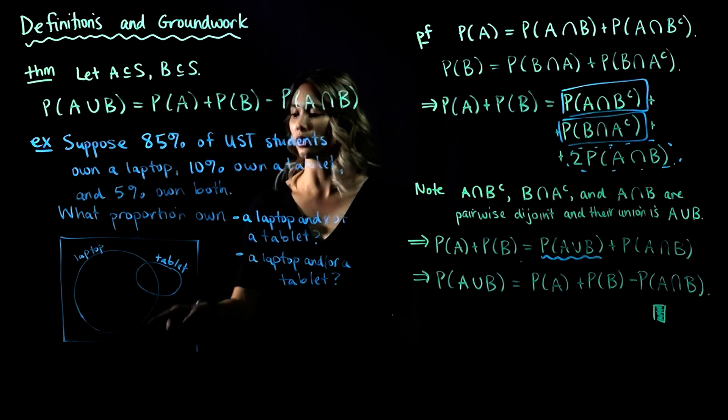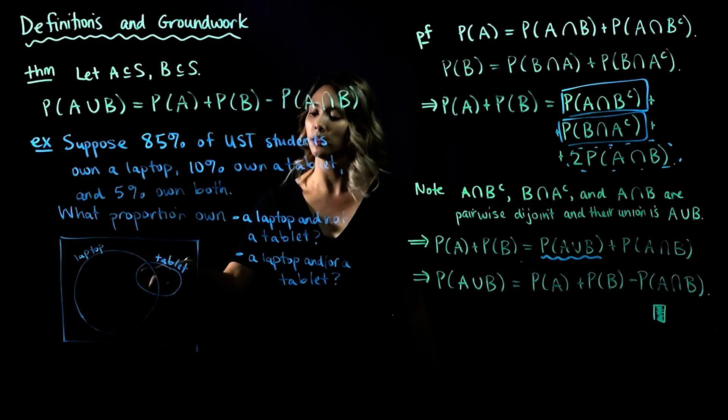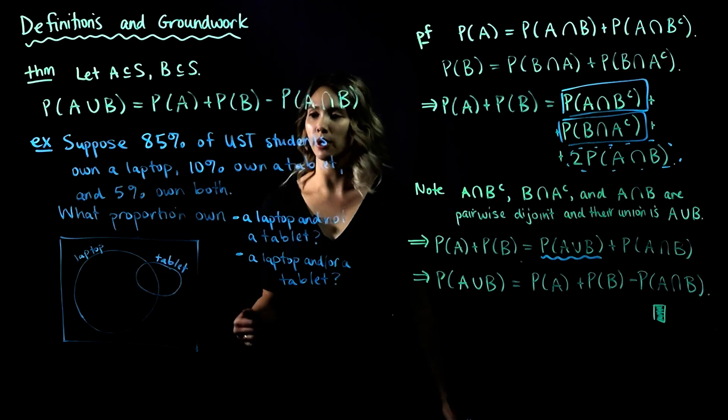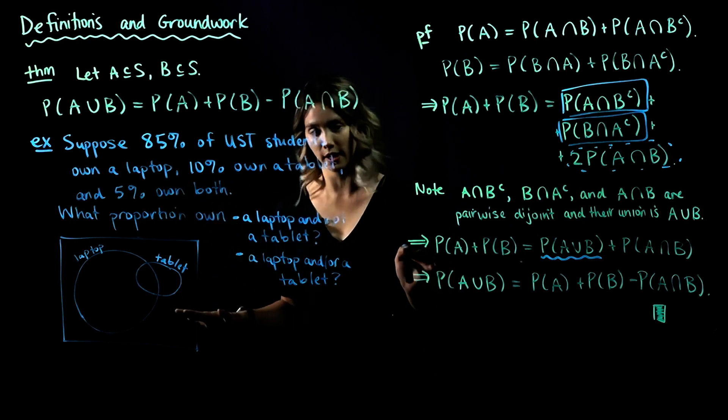Okay, so I drew a big circle for a laptop, because a lot of students own a laptop, and then I have a circle that's small-ish for tablet, because not a ton of students own a tablet, just 10%. I'm trying to make it roughly to scale, but not exactly.